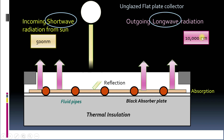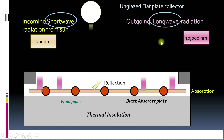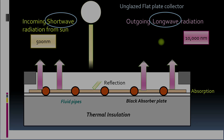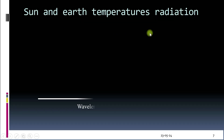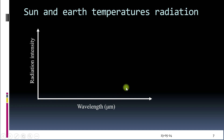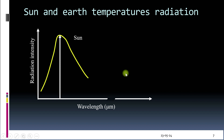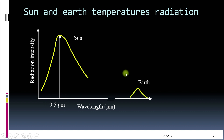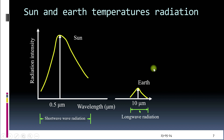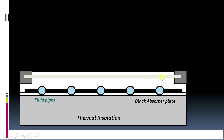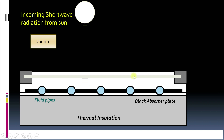For the earth's temperature, maximum energy is emitted around 10,000 nanometer wavelength, and this is called long wave radiation. We can understand this clearly by plotting the sun's spectrum — radiation intensity on the y-axis and wavelength on the x-axis. The maximum energy of the sun is emitted at around 0.5 micrometers or 500 nanometers, whereas the maximum energy for the earth's emitted radiation is around 10 micrometers or 10,000 nanometers.